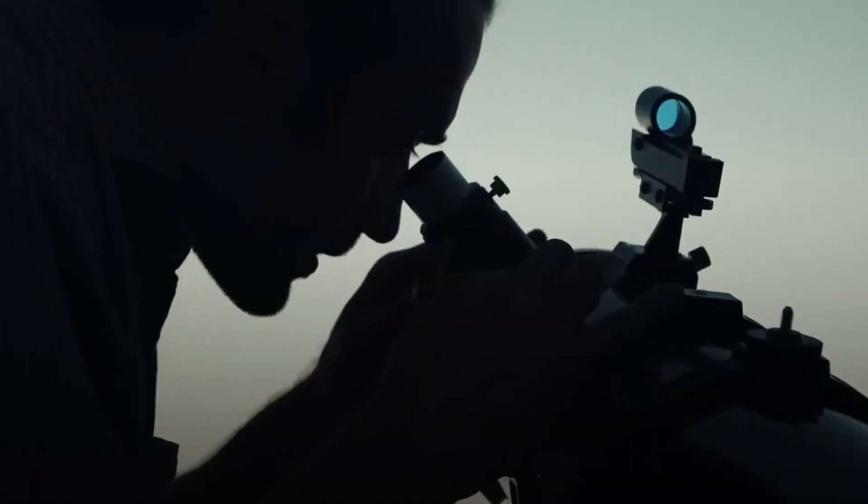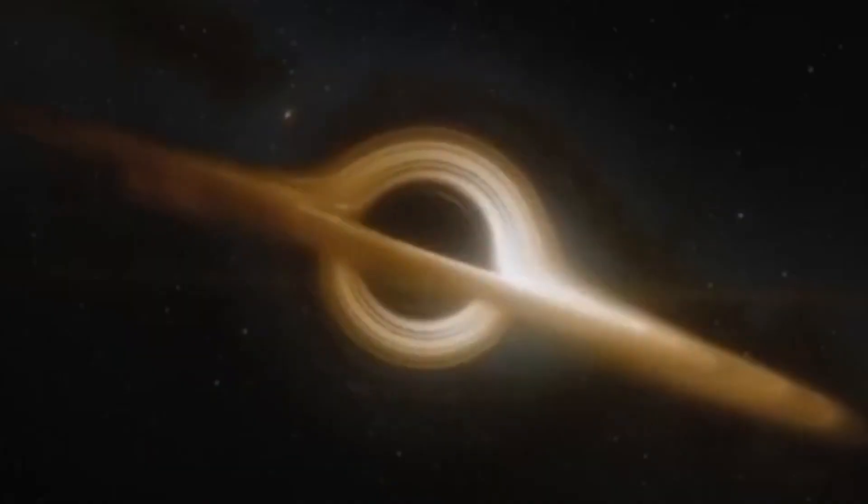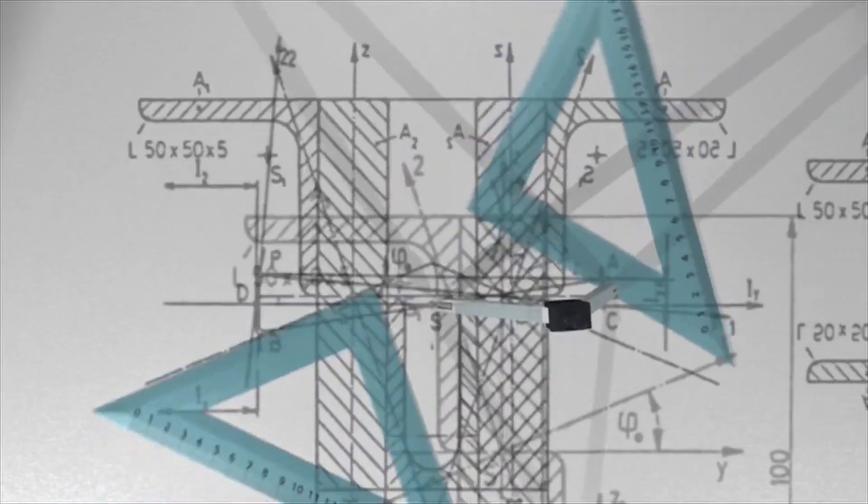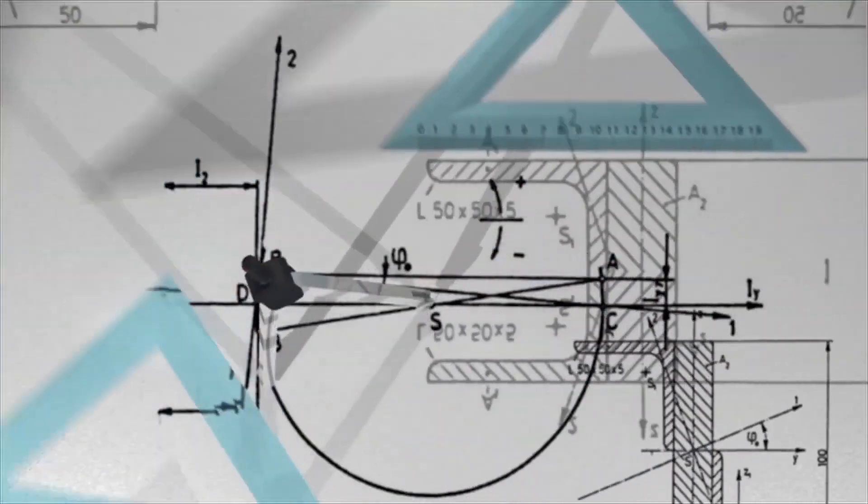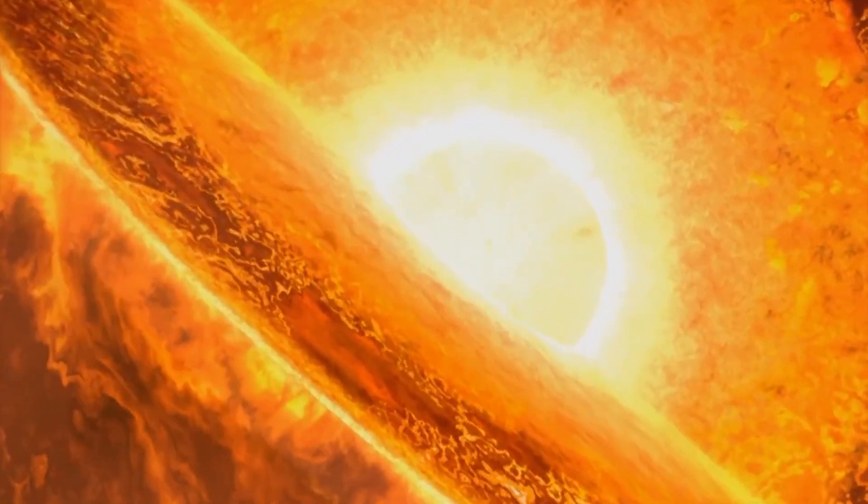Gravitational lensing has since evolved into a vital technique for astronomers, allowing them to study objects that are otherwise too faint, distant, or obscure to be observed directly. One of the most significant applications of gravitational lensing is the observation of distant galaxies and black holes, which are often billions of light years away from Earth. These objects emit light that has traveled across vast stretches of space and time, making them appear faint and difficult to detect with even the most powerful telescopes.